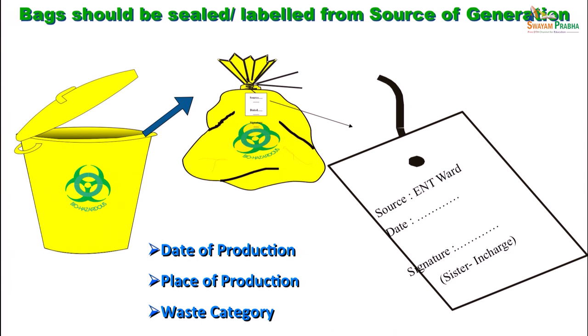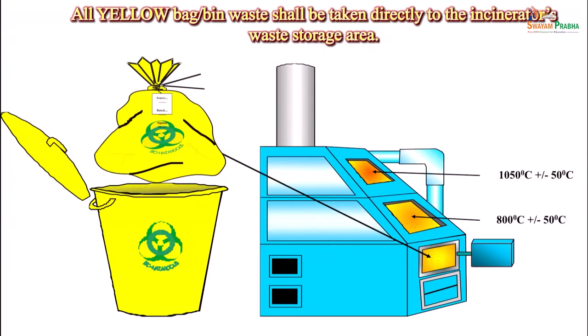You should put the date of production, date, waste category, and all required labeling on the bags. Yellow waste can be directly taken to the incinerator.